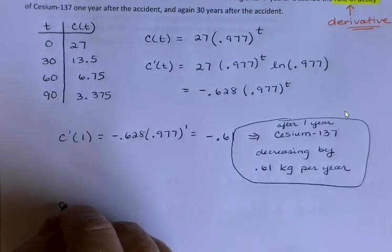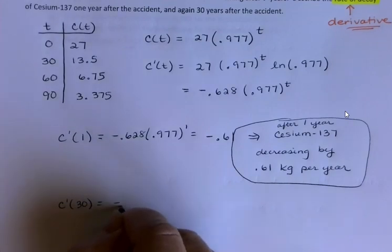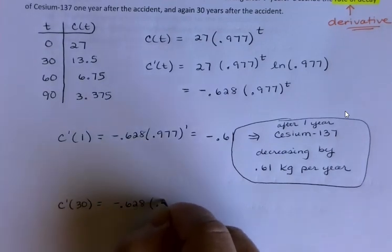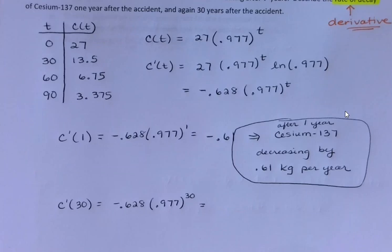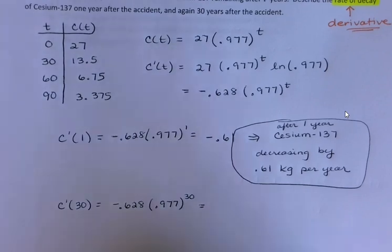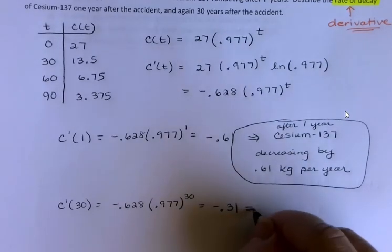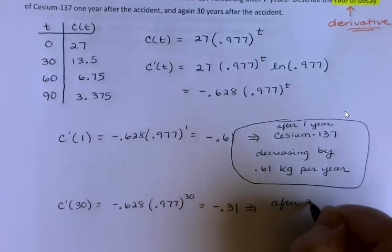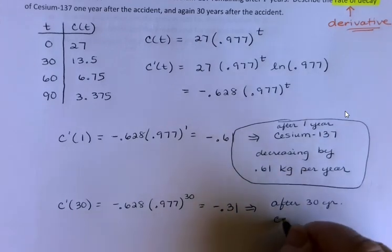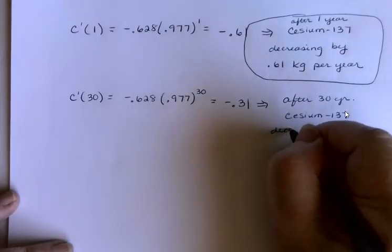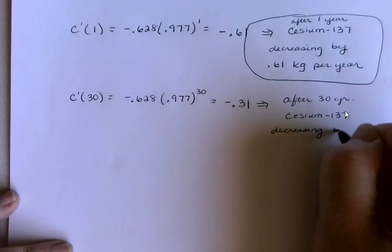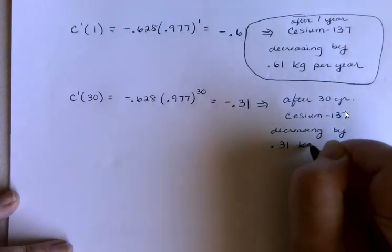Thirty years after the accident, C'(30), I have negative 0.31. So after 30 years, the amount of cesium is still decreasing, but only about half as fast. After 30 years, the cesium-137 is decreasing by 0.31 kilograms per year.